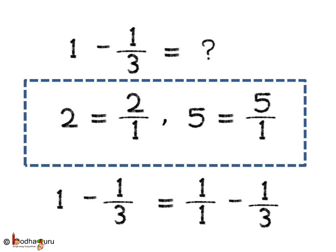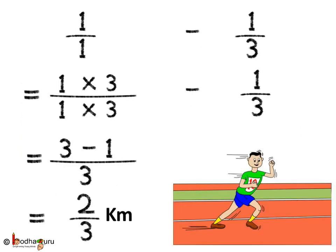Like, two is equal to two by one, five is equal to five by one, and one is equal to one by one. When we divide a number by one, the number remains the same. Right, children? So, it is one by one minus one by three.